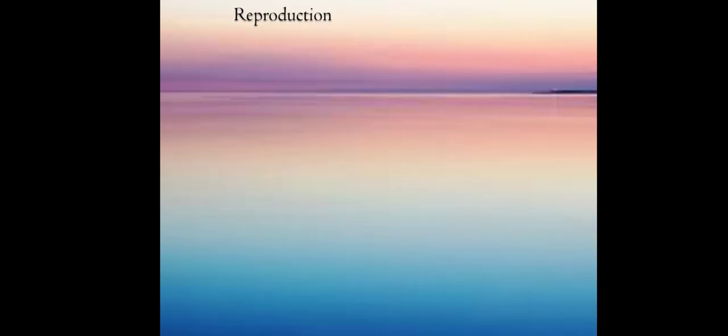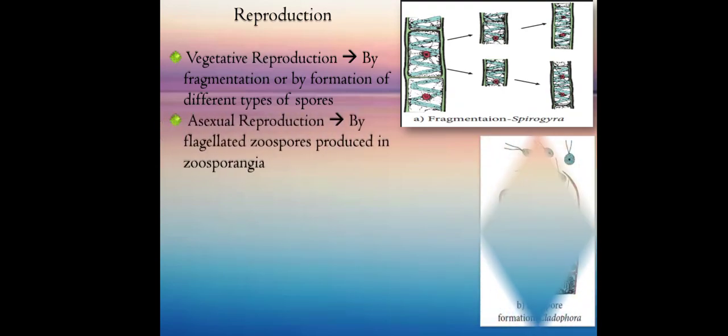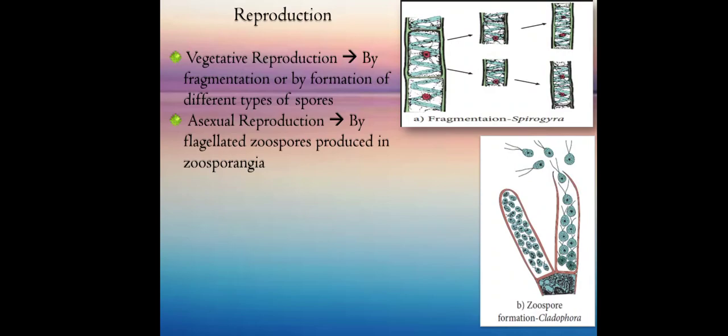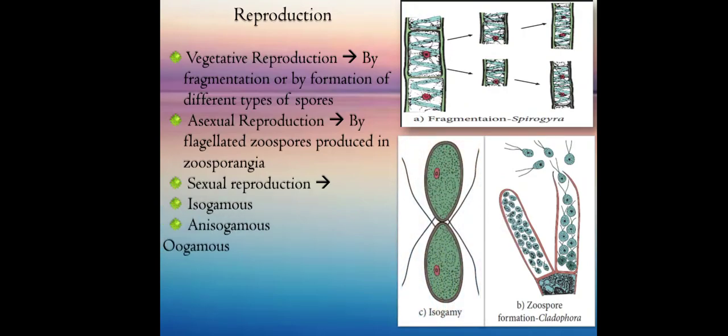Their reproduction is by fragmentation or by formation of different types of spores. Asexual reproduction by flagellated spores produced in zoosporangia or sexual reproduction by isogamous, anisogamous, or oogamous. Some examples of green algae are Chlamydomonas, Volvox, Ulothrix, Spirogyra, and Chara.